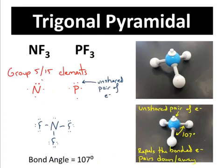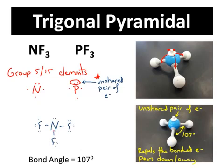Trigonal pyramidal is another shape very similar to trigonal planar. The big difference is that on these elements you're going to have an unshared pair of electrons. That unshared pair of electrons on these group five or fifteen elements is going to repel — it repels the bonded electron pairs downward. This little nub on a model represents that electron pair. Either phosphorus or nitrogen could be the central atom in a trigonal pyramidal situation, with three fluorines, iodines, or chlorines on the outside.